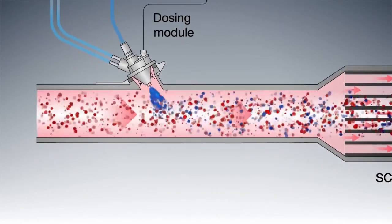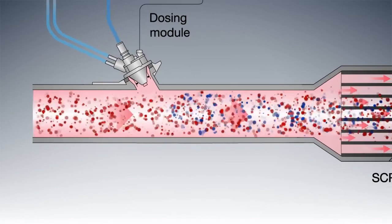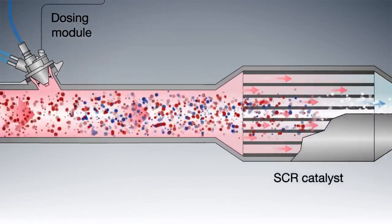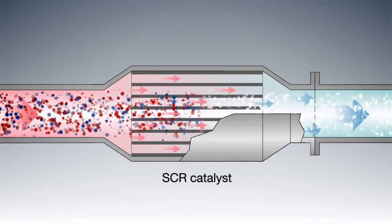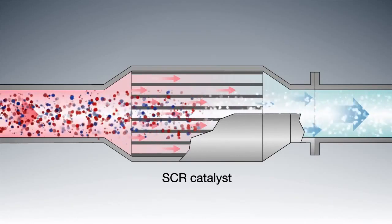When the mixture of exhaust gases and fluid passes through the catalytic converter, the environmentally hazardous nitrogen oxides are converted into harmless nitrogen and water vapor.